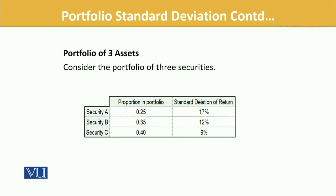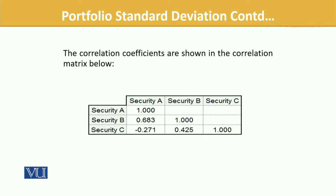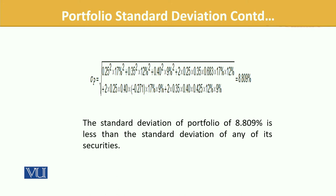Let's do a small example. Here we need to calculate the portfolio standard deviation. Security A and B have a correlation of 0.683. We also have data for assets A to C available from the table. You can see that some assets are negatively correlated. The resulting portfolio standard deviation of 8.89% is less than the standard deviation of any individual security in the portfolio.